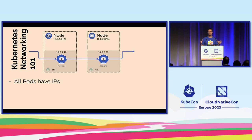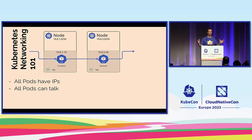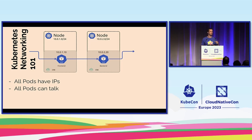First of all, Kubernetes networking is very simple and basic. All pods have an IP address — every individual pod has an IP address — and they can directly talk to each other. There is no specific network topology required. Kubernetes makes the simple assumption of a flat, so-called flat layer three network. This is sometimes implemented differently depending on whether you're running in the cloud or on-prem. You may be running BGP on-prem, using the cloud provider SDN, or running an overlay. Doesn't matter — all of these implement this basic foundation.